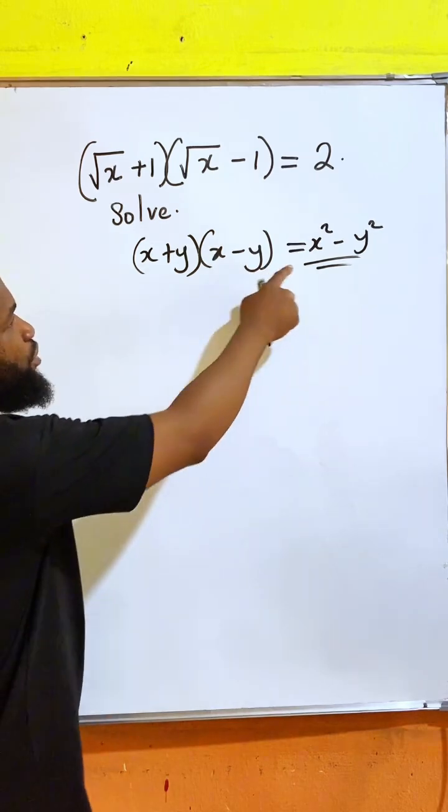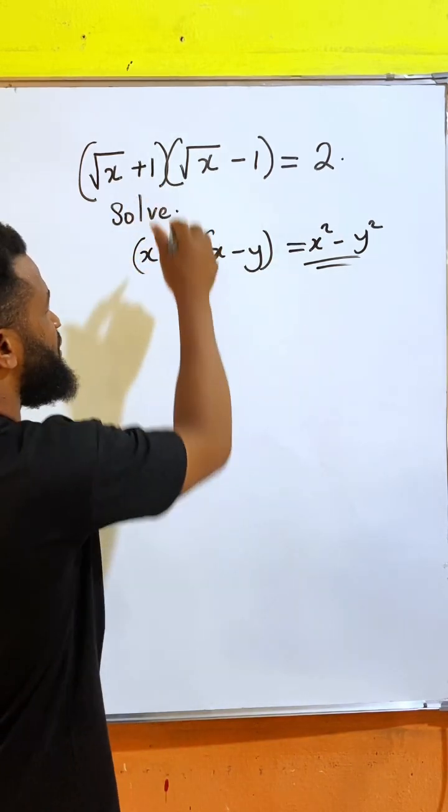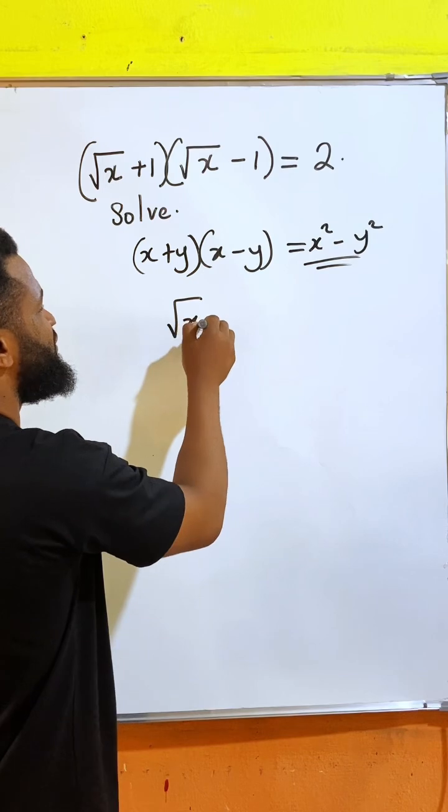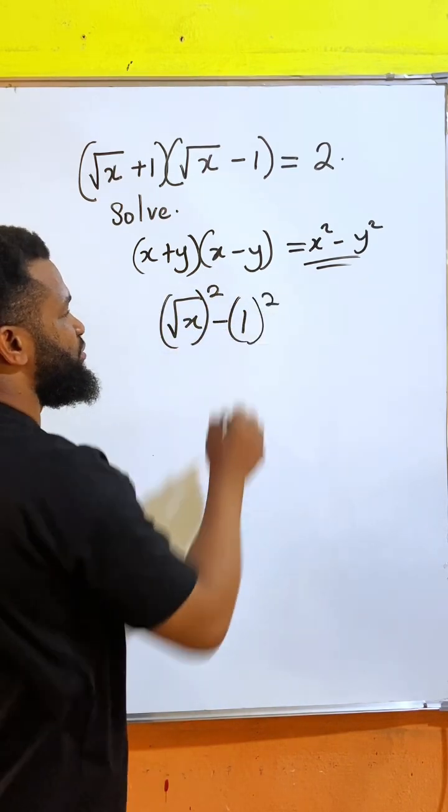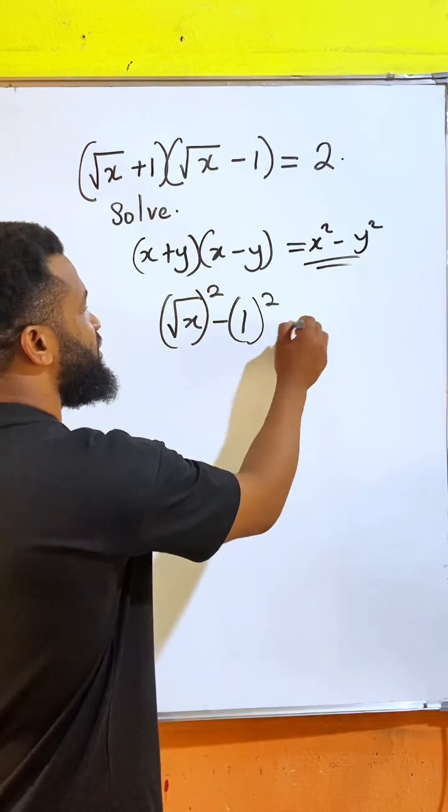I'm going to apply this principle on this equation. That simply means I'm going to have (√x)² minus (1)², and both terms are being squared. Everything equals 2.